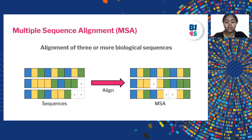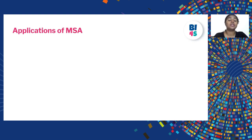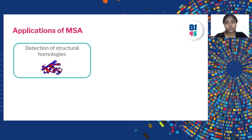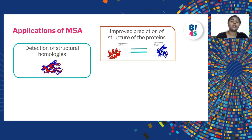Like pairwise sequence alignment, here also we can introduce gaps to get a better alignment between the sequences. There are a number of applications for Multiple Sequence Alignment, most of which are similar to pairwise sequence alignment applications. First is the detection of structural homologies. When you have a new protein sequence for which even the family or any other information is not known, the structure can be predicted by running a multiple sequence alignment between all sequences available in the database and your query sequences.